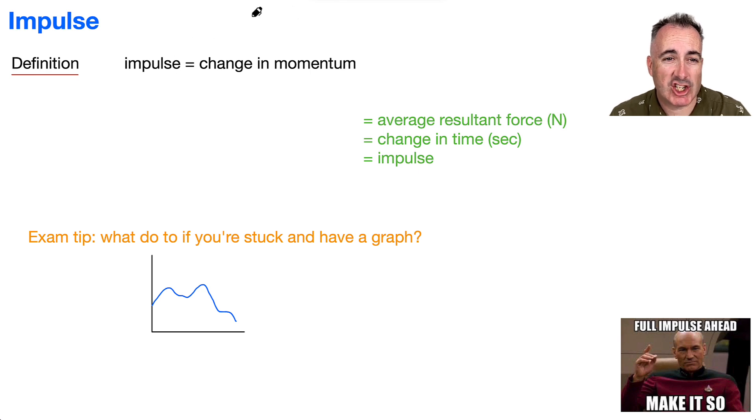Now impulse is a change in momentum. That's really important for you to know this. You could be asked this on an exam. So what is this thing called impulse? We have an equation in your data booklet. It goes like this: J equals F times delta T. So that's the equation for it. This is in your data booklet, so you don't have to memorize it.